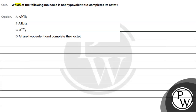The question says: which of the following molecules is not hypovalent but completes its octet? Option A: AlCl₃, Option B: AlBr₃, Option C: AlF₃, Option D: All are hypovalent and complete their octet. The key concept for this question is hypovalent species.